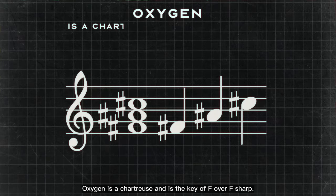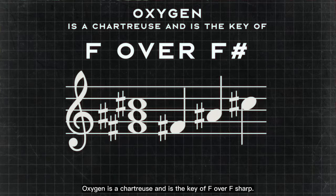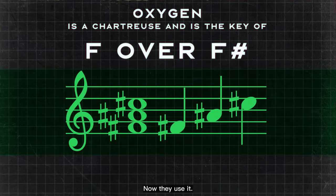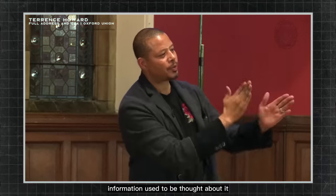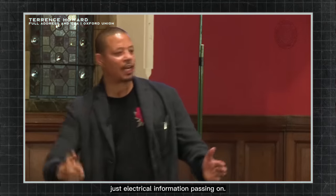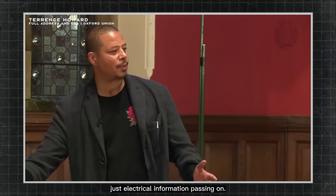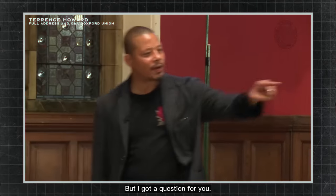Oxygen is a chartreuse and it's the key of F over F sharp. Now they used to, like I said, think about information as just electrical information passing on. But I've got a question for you.